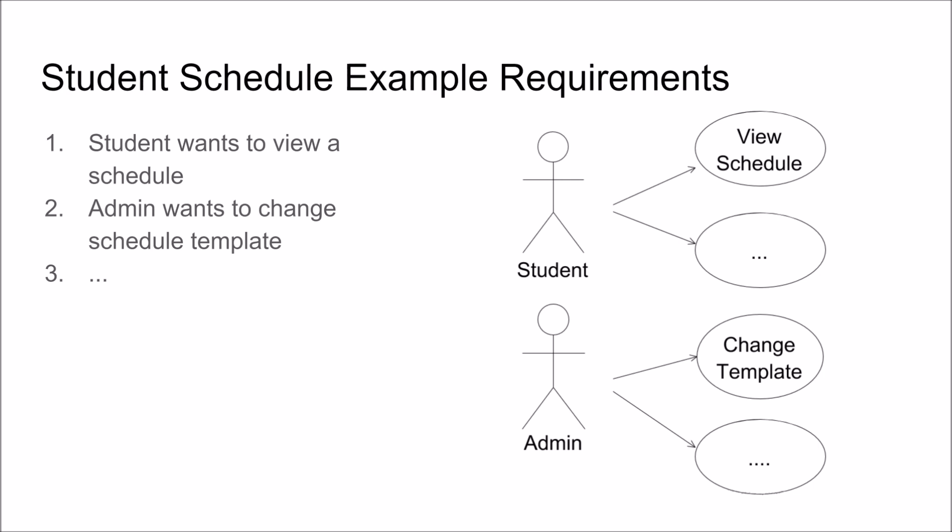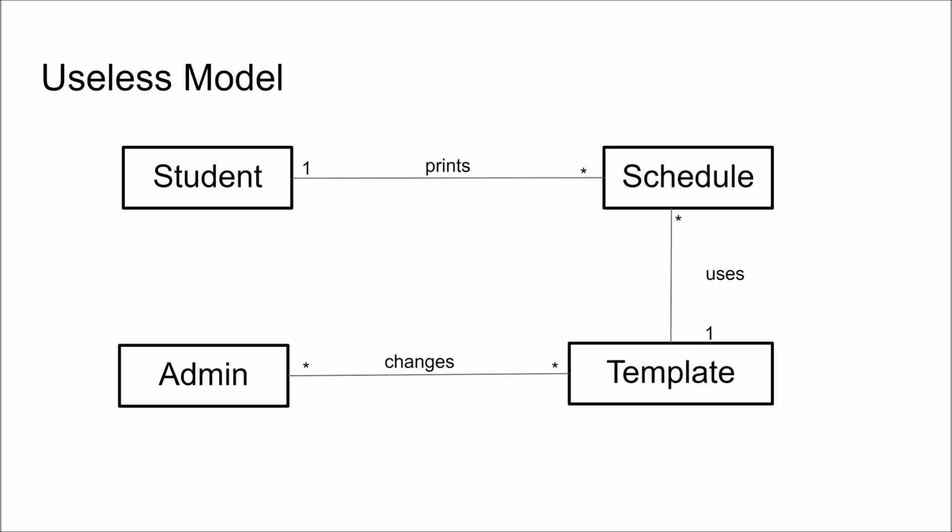We can show this in a use case diagram where we have the actor student and admin, and we have the use cases: view schedule, change template, and so on. To create the domain model from this could look something like this. You have the student class, the schedule class, the template class, and the admin class. We show that the student prints schedules, that the schedule uses a template, and the admin changes a template.